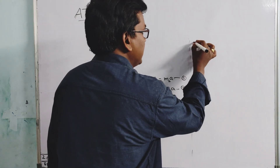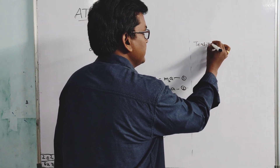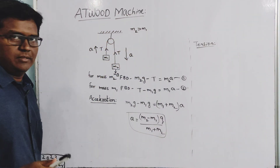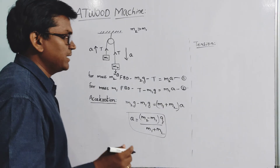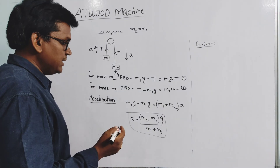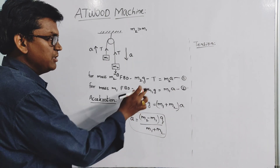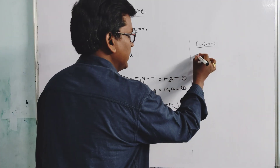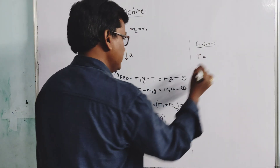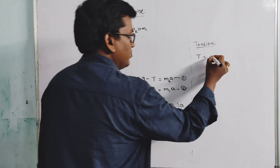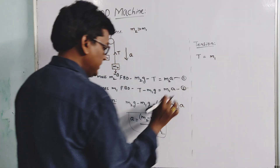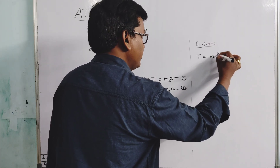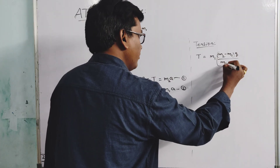Now let us find the tension in the string. Since the two masses are accelerating, there will be tension in the string due to their masses and gravity. Substituting the acceleration value into equation 2: T equals m1g plus m1 times [(m2 minus m1)g divided by (m1 plus m2)].